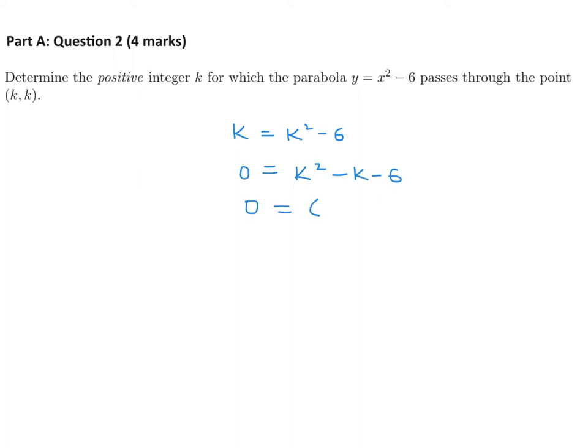And I think this factors very nicely. So k would be equal to either minus 2 or 3. But they want the positive integer k, so k is only equal to 3. So just make sure you don't miss that.